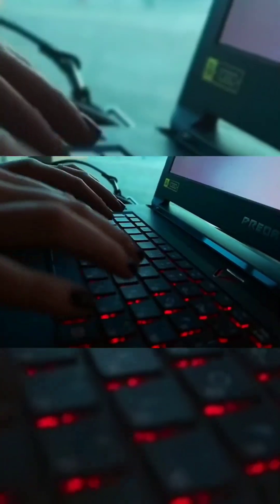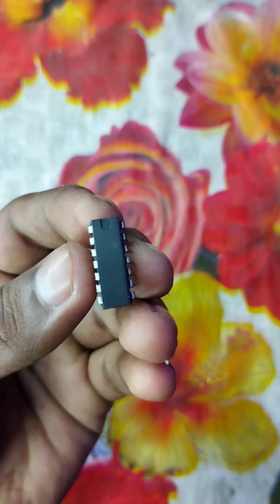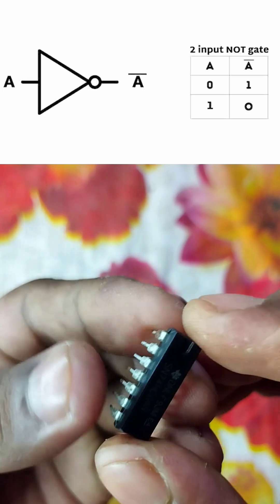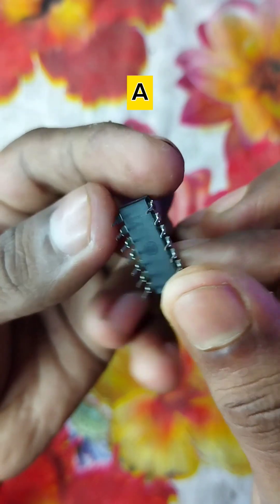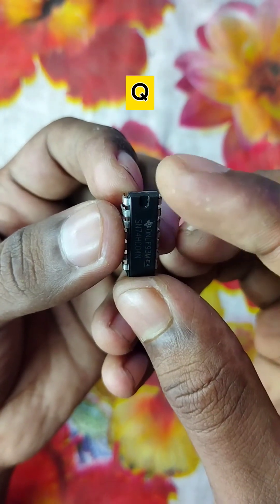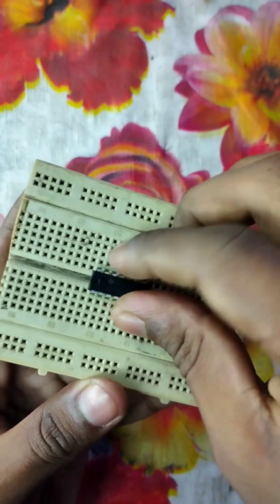Have you ever wondered how computers make decisions? It all starts with something called logic gates. One fundamental logic gate is the NOT gate. The NOT gate has a single input, often labeled as A, and a single output usually labeled as Q. Let's see how this logic gate will work. First, let me